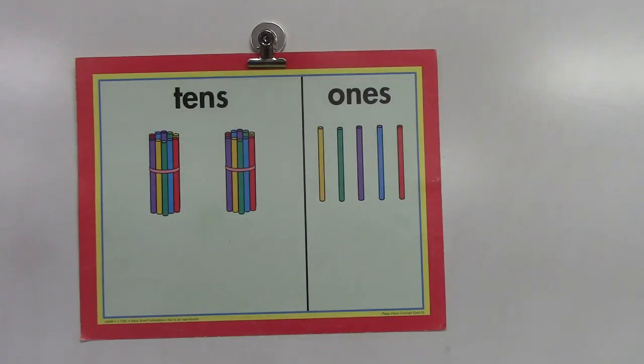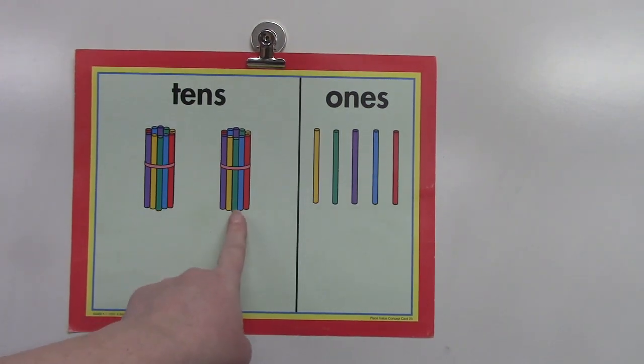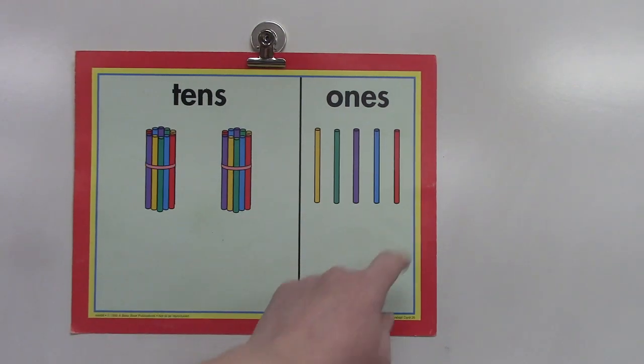Our card shows us that the two on the other side really says that there's two groups of 10, and the five tells us that there's five more and there's just not enough to make another group of 10.